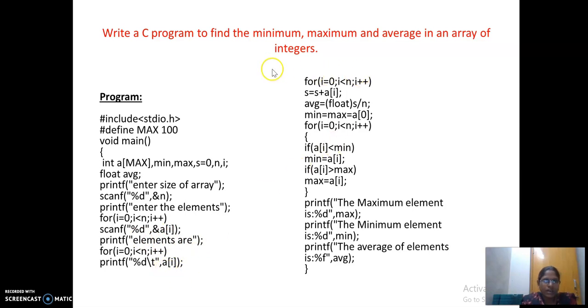Now, see here how to find out the first minimum and maximum average. What I am going to do before calculating the average, I should find out the sum of the elements in the list. For that, I am using for loop. For i is equal to 0, i less than n, i plus plus. S is equal to s plus a of i. So, I will get the sum here. Average, I will typecast this as floating point value by n.